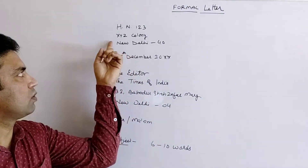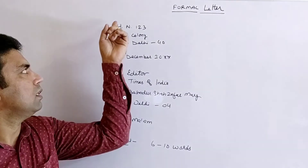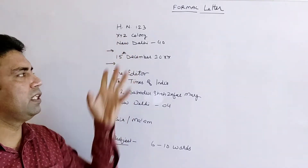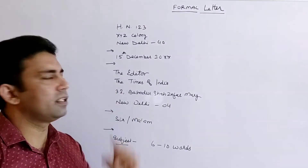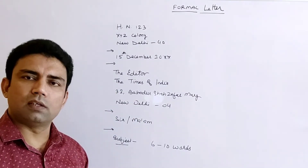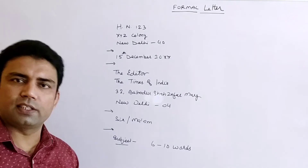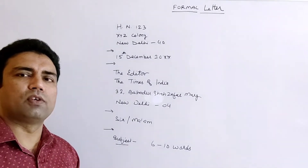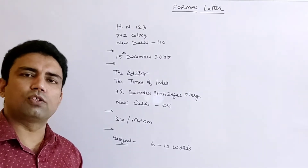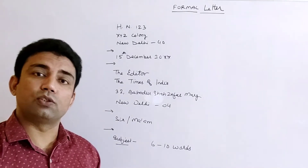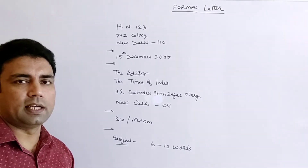Now let's begin with the format of the letter. First of all we write our own address — this is the sender's address. For example: House Number 123, XYZ Colony, New Delhi 40. It is better to finish the address in three lines only. The first line is for your house number, flat number, building name, or street number. The second line is for your colony or a nearby landmark. The third line is only for the city along with the pin code.